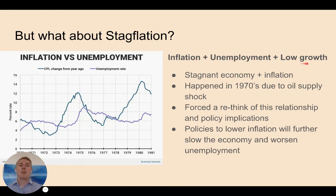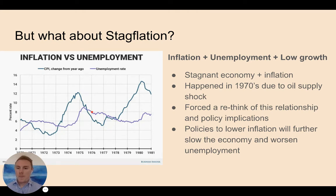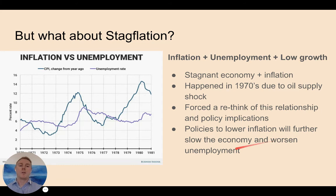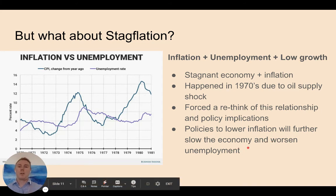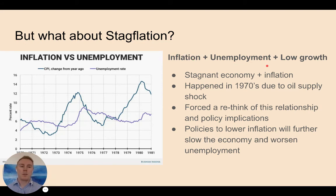Stagflation goes against what we've said should occur on the Phillips curve. It happened in the 1970s due to the OPEC oil supply shock — a big jump in the price of oil caused recessions in different places around the world. We can see that this is when we had increasing CPI and still had increasing unemployment — they went up together — with two different spikes in the early and later 1970s. This forced a rethink of this relationship and its policy implications, because policies to lower inflation would further slow the economy and worsen unemployment.